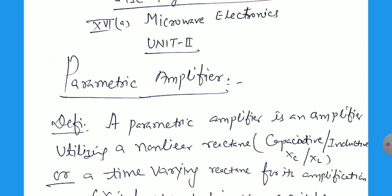Reactance — we know very well that for the capacitance we use Xc equal to 1 by omega C, and for the inductive reactance, Xl equal to omega L. This reactance is used for non-linear devices where Ohm's law is not valid — V is not directly proportional to the current — and such an amplifier is called the parametric amplifier.